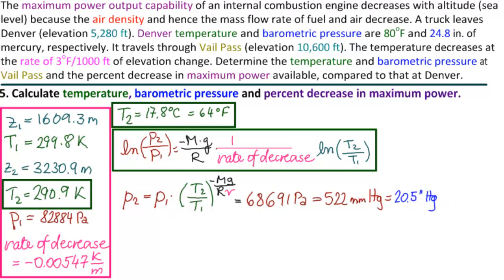So pick any of these as your answer to the pressure. And the last thing we need to do is find the percent decrease in maximum power. Now remember that in order to find a percent decrease. A percent change. We always take the new value minus the old value divided by the old value. Times 100%. Now this is for power. We don't know the powers.